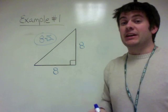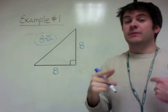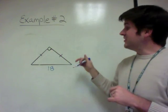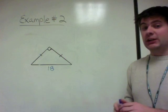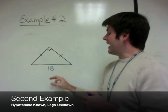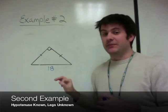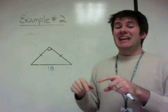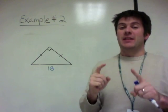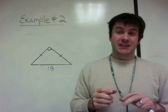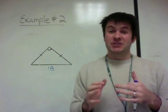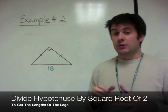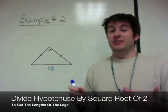Now let's look at another example where we do the reverse process. We have an isosceles right triangle, but this time we know the hypotenuse and have to figure out the lengths of the legs. In our previous example, we multiplied the leg by the square root of 2 to get the hypotenuse. Now we do the opposite: take the hypotenuse and divide by the square root of 2 to get the legs.